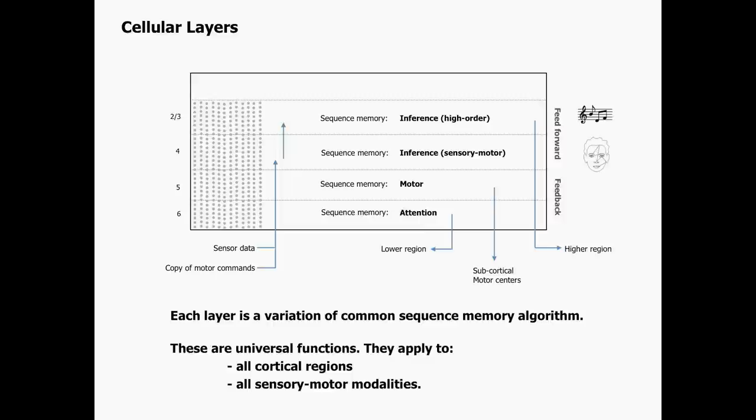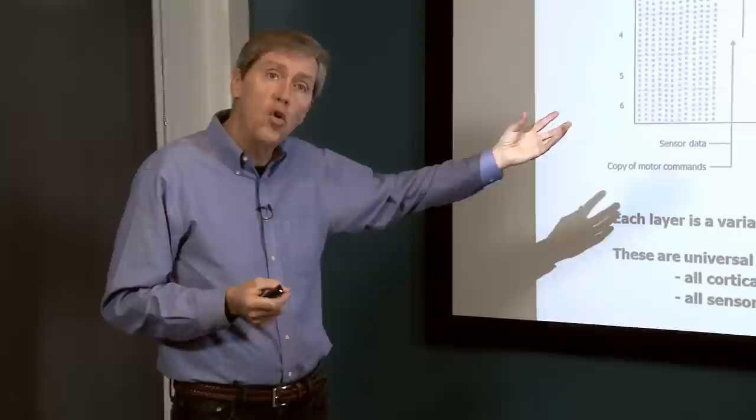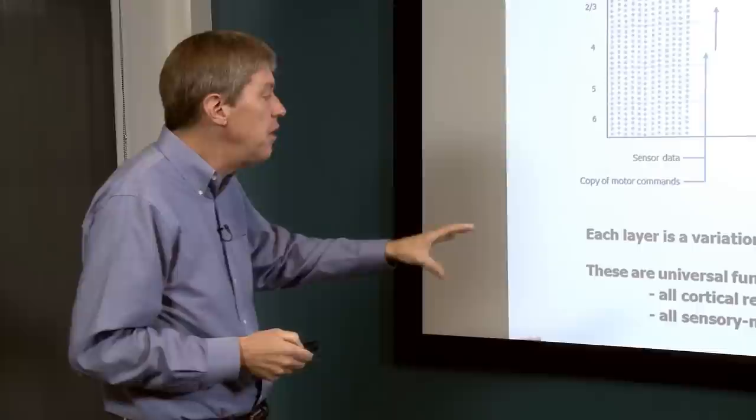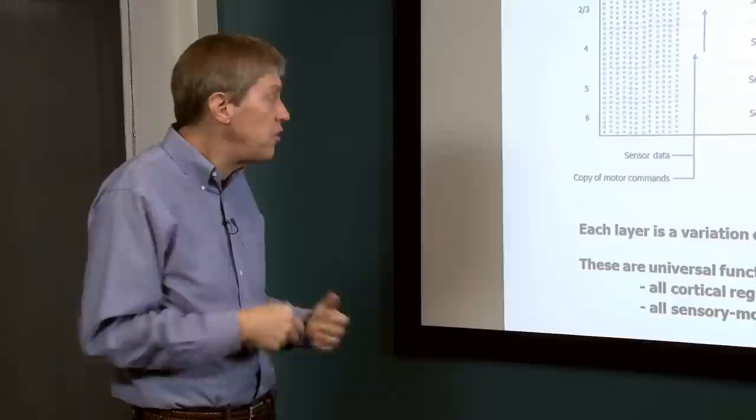There's a common algorithm running through all of this, and these are universal functions. Everything I described about the cortical region applies to any sensory modality — vision, hearing, touch, language, science. Everything the cortex does can fit into this. These are powerful universal ideas, and that's what we want to find in the cortex because it's a universal learning algorithm.